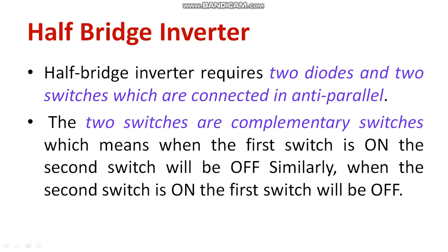In case of a half bridge inverter, there will be two power switches and two diodes. The two diodes are mainly used for preventing the reverse current flow, ensuring protection for the switches.